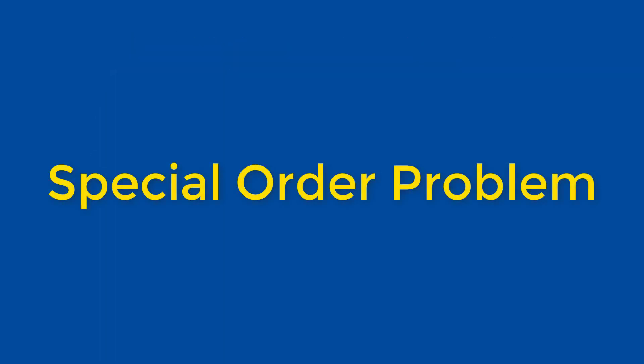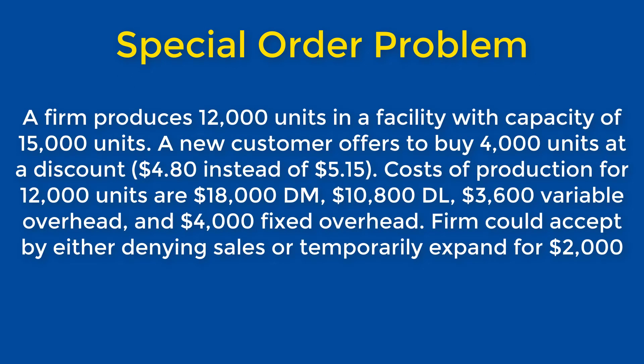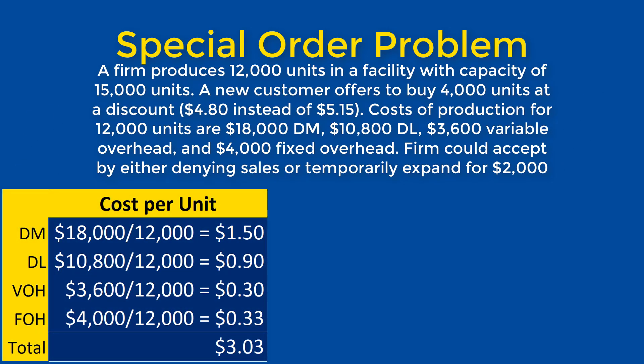Next, let's look at an example of a special order problem. A firm produces 12,000 units in a facility with a capacity of 15,000 units. A new customer offers to buy 4,000 units at a discount. Costs of production for 12,000 units are $18,000 in direct material costs, $10,800 in direct labor costs, $3,600 in variable overhead, and $4,000 in fixed overhead. The firm could accept by either denying existing sales or temporarily expanding its facility for $2,000. In order to examine alternatives involving different levels of production, we must first express costs on a per unit basis.